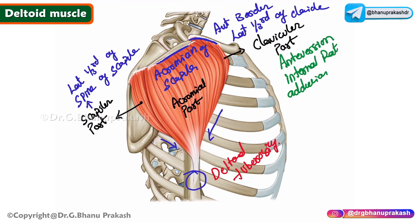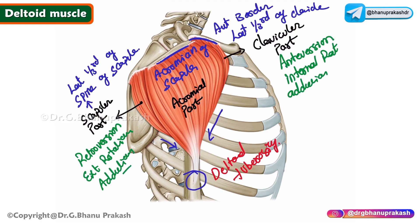The scapular part performs functions largely opposite to the clavicular part. When the clavicular part does anteversion, the scapular part does retroversion. When the clavicular part performs internal rotation, the scapular part performs external rotation. Both the clavicular and scapular parts also perform adduction.